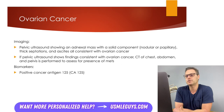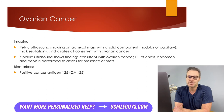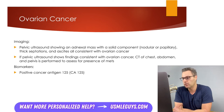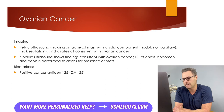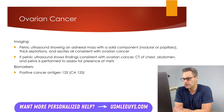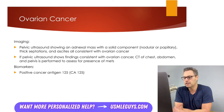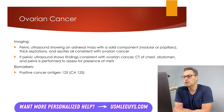In terms of imaging, pelvic ultrasound is first-line and will demonstrate an adnexal mass. Characteristics that point to the mass more likely being malignant include having solid components; the presence of ascites is also more closely associated with a malignant adnexal mass. If the pelvic ultrasound shows findings consistent with ovarian cancer, a CT of the chest, abdomen, and pelvis is performed to look for metastases. CT findings may show pleural effusions, metastases to the lungs or liver, mediastinal lymphadenopathy, and ascites.